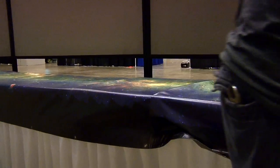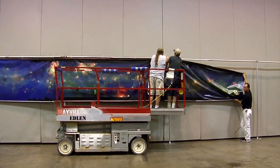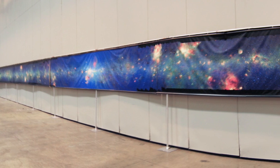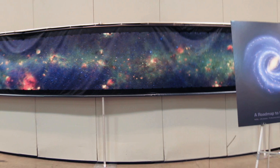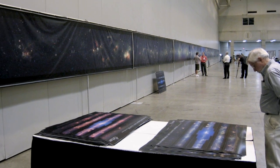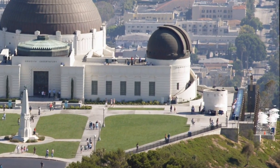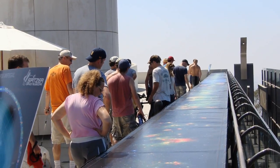A space image this big takes a lot of space to show off. Spitzer unveiled this giant banner, 4 feet tall and 180 feet long, at the 2008 Summer Meeting of the American Astronomical Society in St. Louis. Since then, it's been on display at the Adler Planetarium in Chicago and at the Griffith Observatory in Los Angeles.